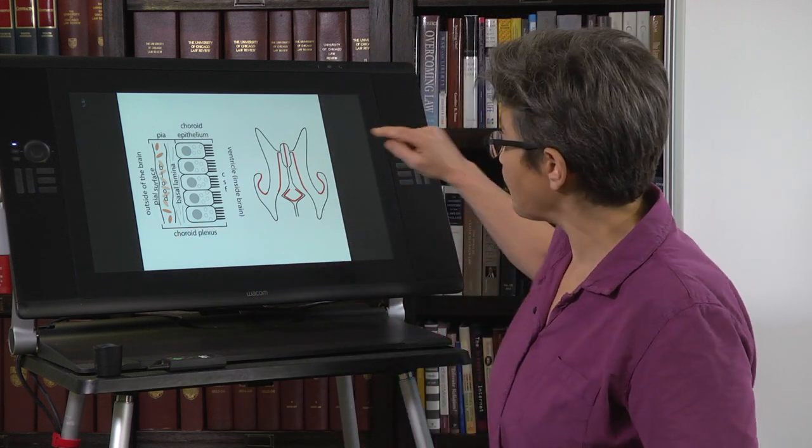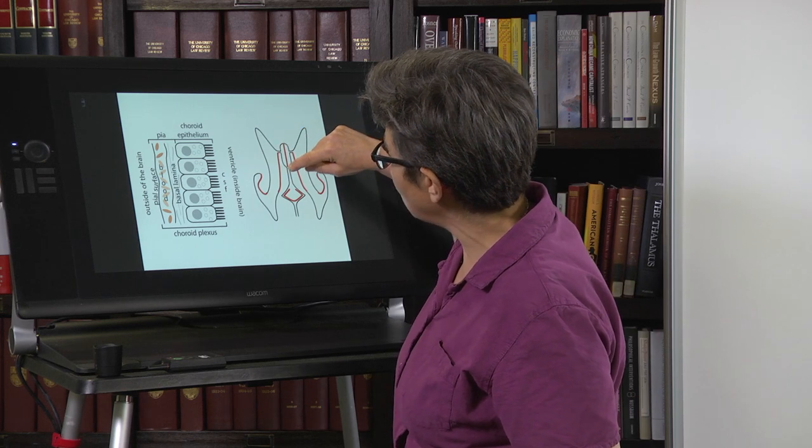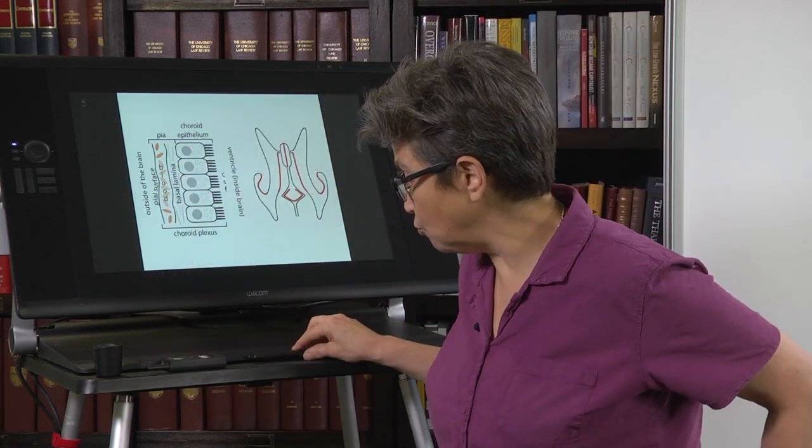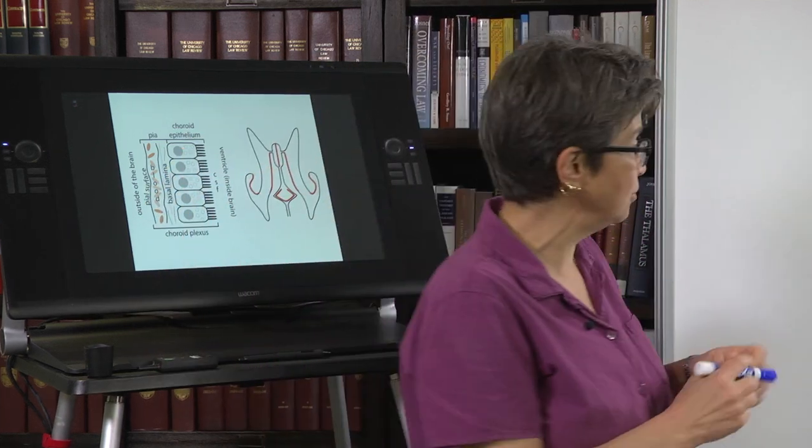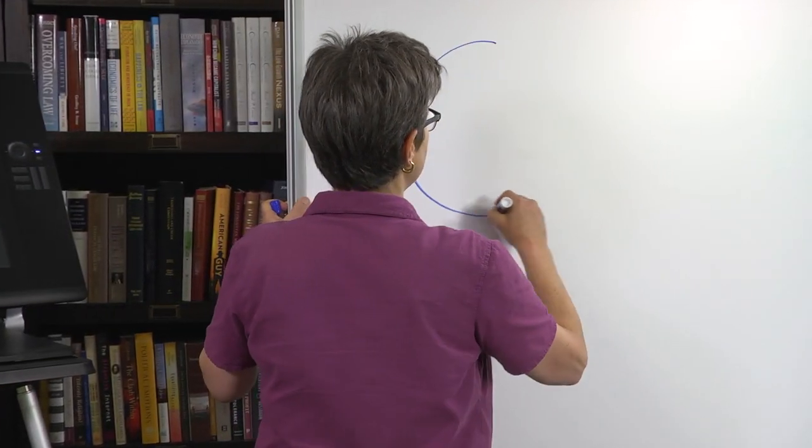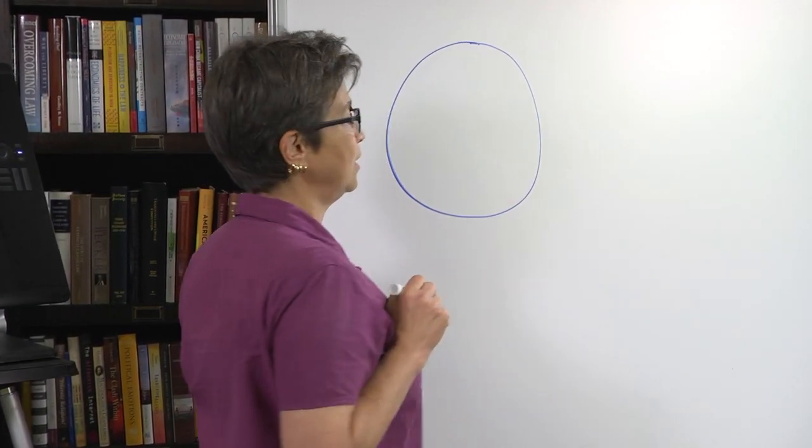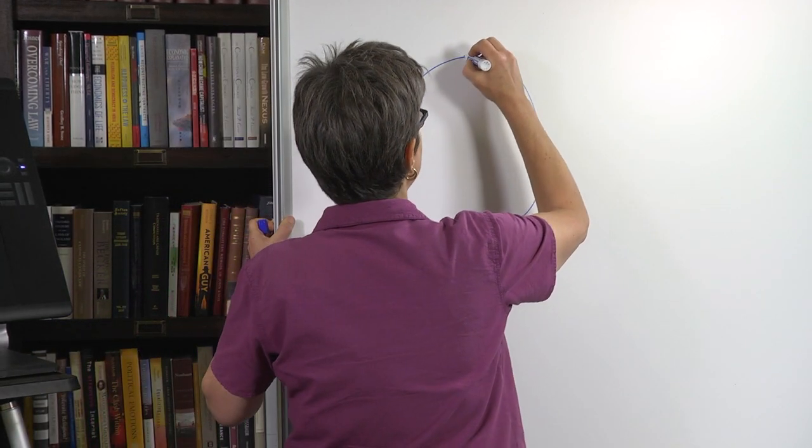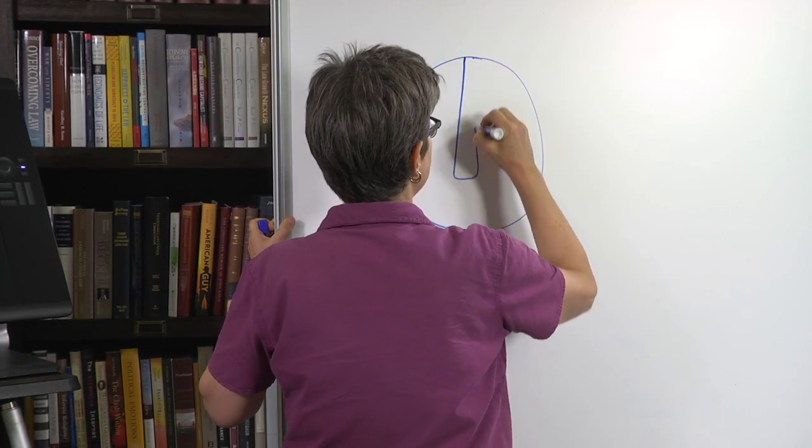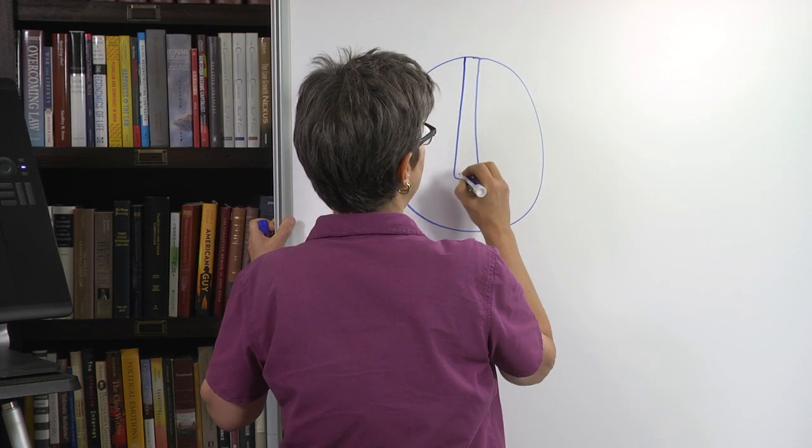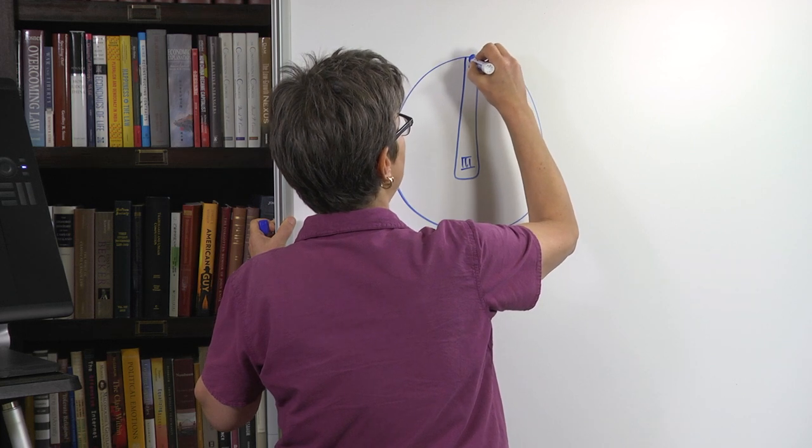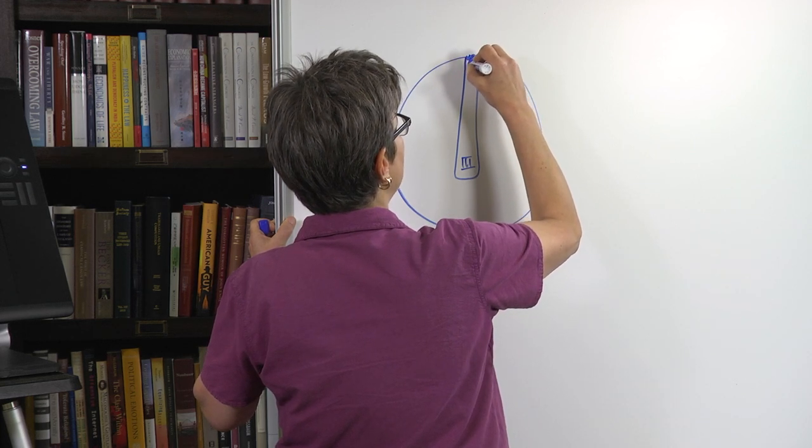So the choroid plexus that's in the third ventricle is in the roof. What we can do, we can go to the board and look at this. Here is, we're just going to diagram the diencephalon as a circle. And the ventricle is a slit right on the midline. This is the third ventricle.